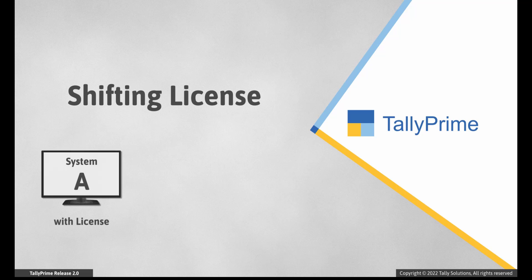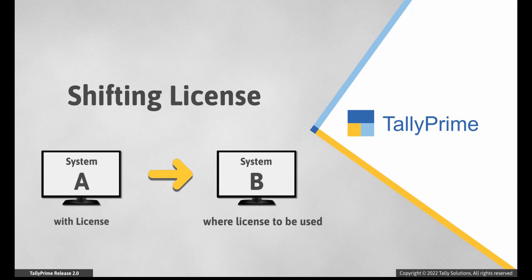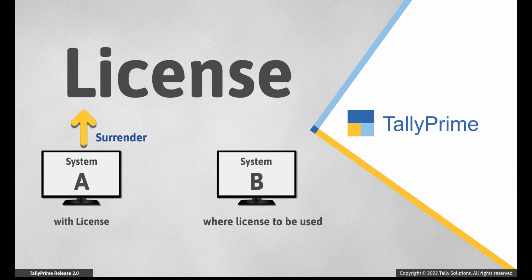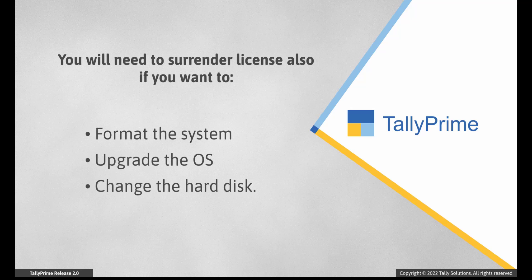There may be a situation where you want to use Tally Prime on a new system B, while your license is configured in a particular system A. You will need to surrender the license in System A and then reactivate in System B to continue using Tally Prime in the new system seamlessly. You may also want to format the system, upgrade the OS, or change the hard disk. In such cases, you will need to surrender the license.